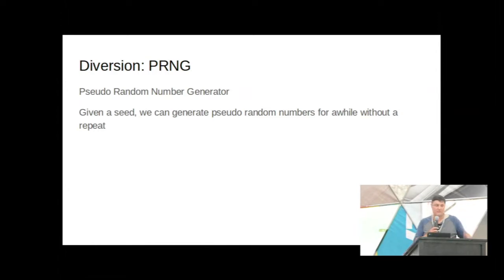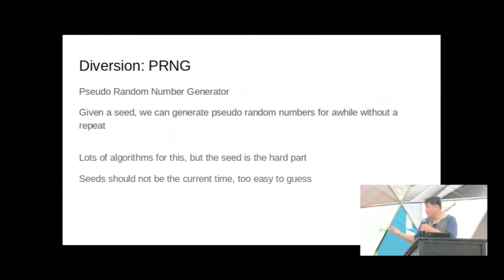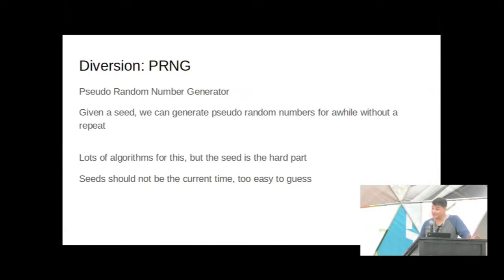A quick diversion on pseudo-random number generators: given a seed, a PRNG can generate pseudo-random numbers for a long time — on the order of 32 billion random bytes — before it cycles around, but it will eventually cycle. The seed is the really hard part. Back in the days of Mozilla 3.0, they were seeding the random number generator with the date and time — a lot of programs did that — and that was so easy to guess, meaning the entropy was essentially zero.